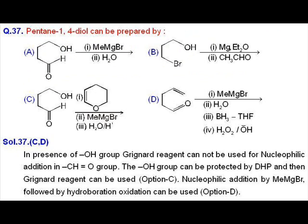Question number 37, the answers are C and D. So when OH group is present, Grignard reagent cannot be used directly for nucleophilic addition reactions. It has to be protected by using DHP, dihydropyran, and then the Grignard reagent is used and nucleophilic addition by MeMgBr takes place followed by hydroboration oxidation. So the answers C and D are correct.